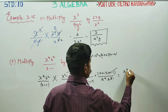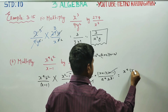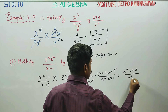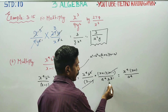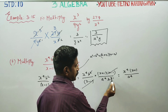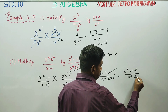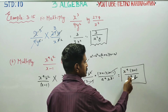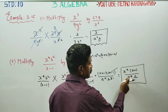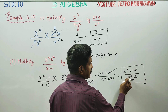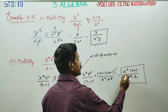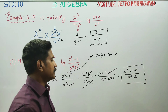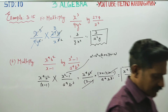Your final answer will be x power 4 times x plus 1, divided by a power 4 times b power 1. This is your final answer — the powers match and the cancellations are complete. Thank you.